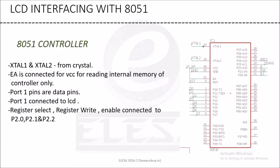In the 8051 schematic, XTAL1 and XTAL2 form a crystal oscillator circuit. The EA pin of 8051 is connected to VCC — that is power supply — so that we can read only the internal memory of the controller. Port 1 is connected to the LCD; data will arrive at port 1. The pins RS, RW, and EN are connected to P2.0, P2.1, and P2.2.